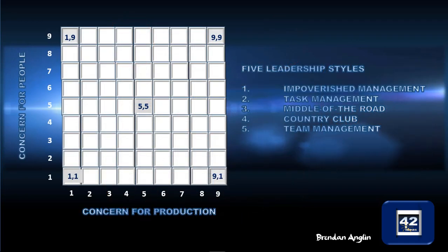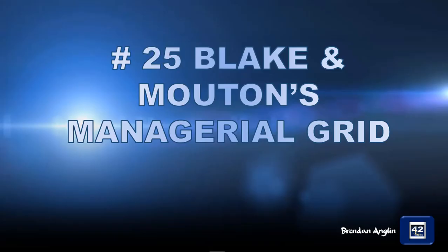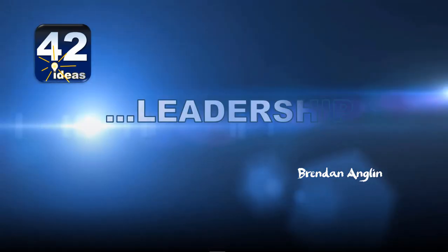So this is the managerial or leadership grid by Blake and Mouton — nine scores on the x-axis and nine on the y-axis — which leads to five leadership styles: impoverished management, task management, middle of the road management, country club management, and the optimal style, team management. That's number 25 in the 42 ideas on leadership. Thank you.